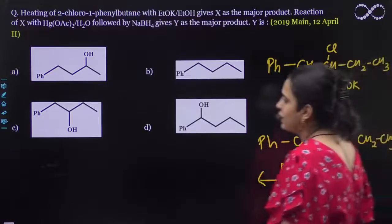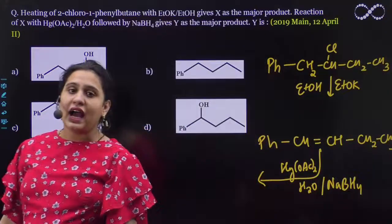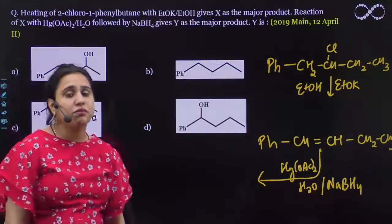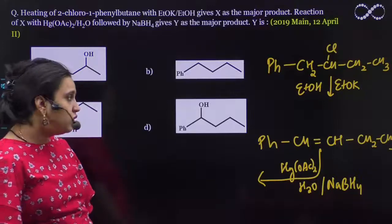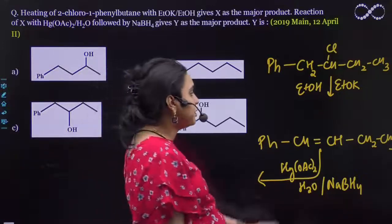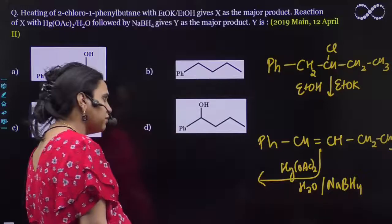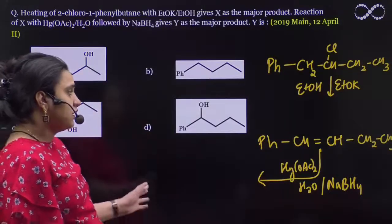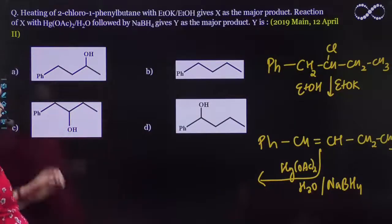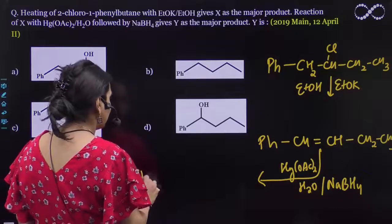Your alcohol will form here, and the alcohol will form according to the Markovnikov rule. Meaning where you have the greater number of hydrogens, there your OH will go. So the product will be...